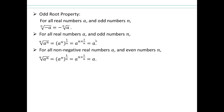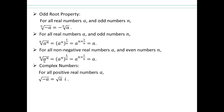If it's an even number, you still get an a, but you need a non-negative real number inside. For example, negative 2 squared is 4, and the square root of 4 is 2, not negative 2. On the other hand, if you're working with the square root of negative numbers, the square root of negative 1 is i, so the square root of negative a is just the square root of a times i.